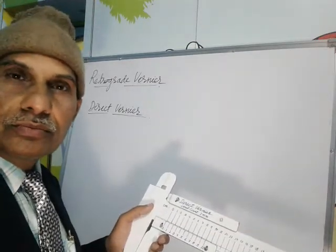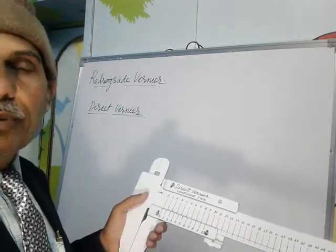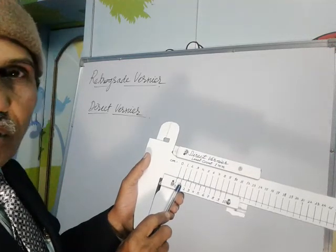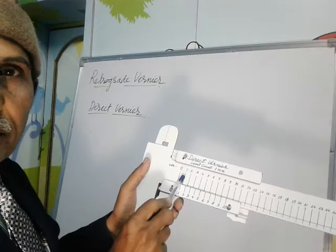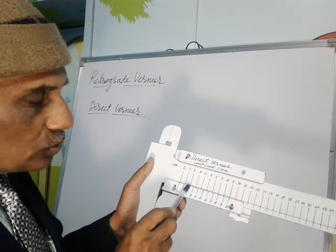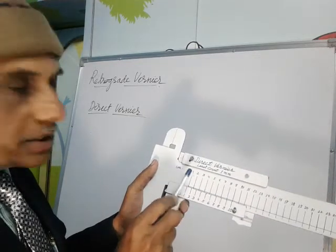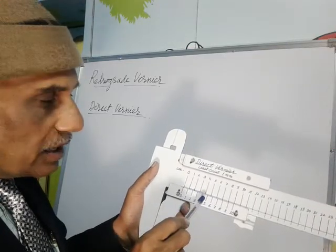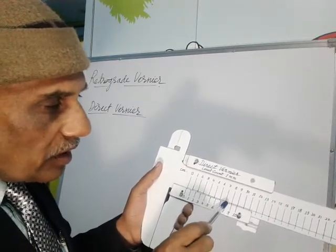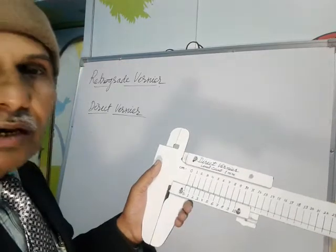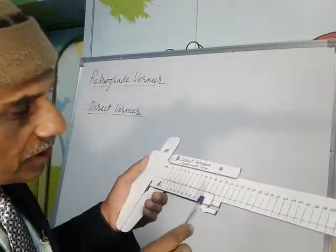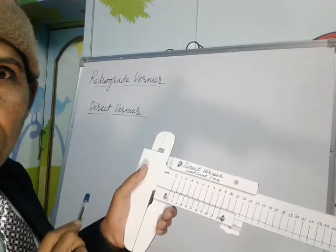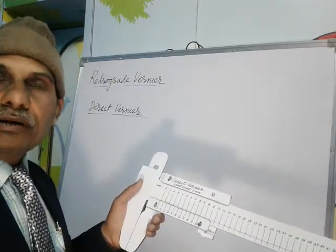The difference between the two is 1 minus 0.9, which equals 0.1. So the first division of the Vernier falls 0.1 cm before the first division of the main scale. The second division falls 0.2 cm before the second division of the main scale. The third division falls 0.3 cm before the third division of the main scale, and so on. The eighth division falls 0.8 cm before the eighth division of the main scale. The tenth division falls before 1 cm, so it coincides with 9 cm. This is the basic principle of the Vernier.